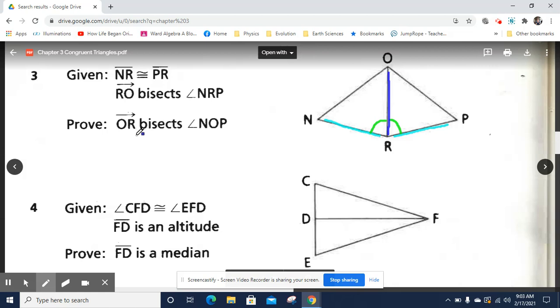Now, you're supposed to figure out if OR bisects NOP, angle NOP. The way you could know if OR bisects NOP is if this angle is congruent to this angle.